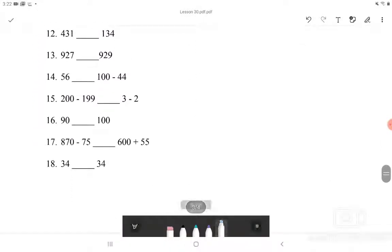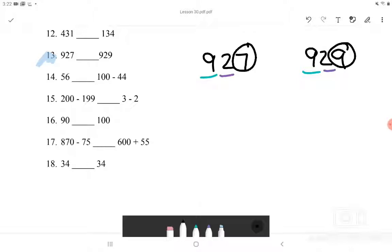Lastly, I will be doing number 13. Number 13 says 927 and 929. The greatest number 9 and 9 are equal to each other, and the next greatest number, 2 and 2, are also the same. So we will have to compare the last number, which is 7 and 9. 7 is less than 9, so we can say that 927 is less than 929. And this is how you're going to compare numbers.